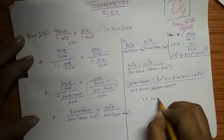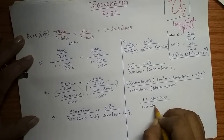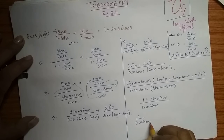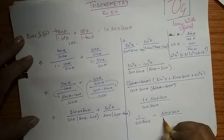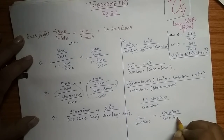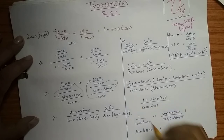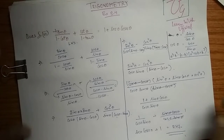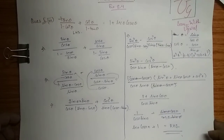So we get 1 plus sin θ cos θ upon cos θ sin θ. We can write them separately: 1 upon cos θ sin θ plus sin θ cos θ upon cos θ sin θ. The second term becomes 1, and 1 upon cos θ is sec θ, and 1 upon sin θ is cosec θ. So we get 1 plus sec θ cosec θ, which is our RHS. We have verified this identity with the help of these trigonometric identities.